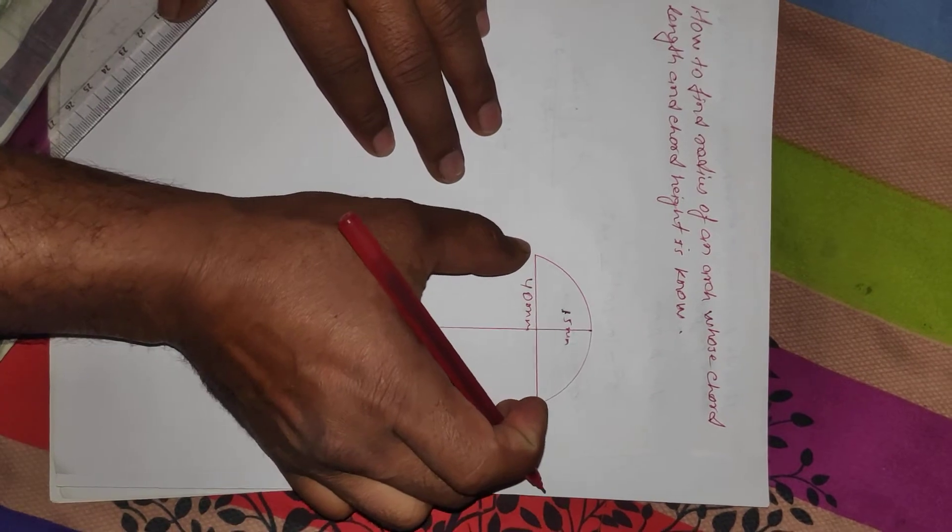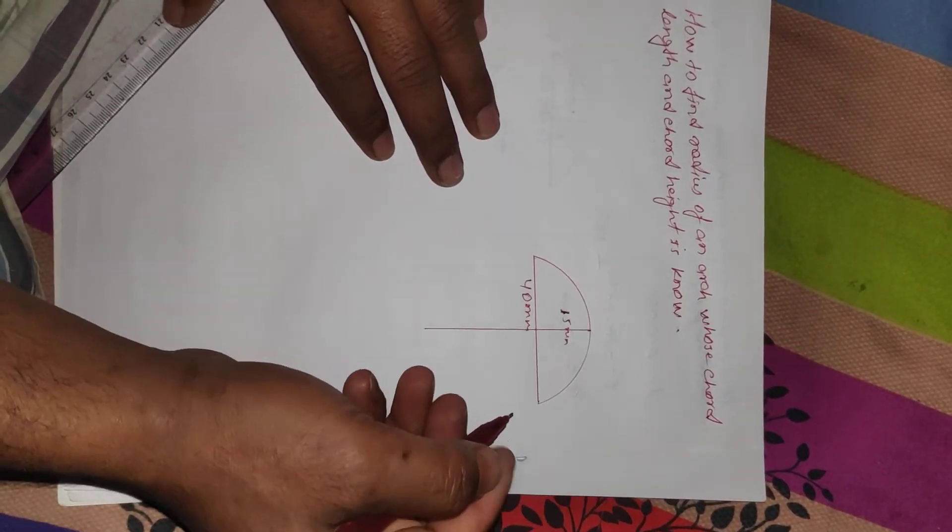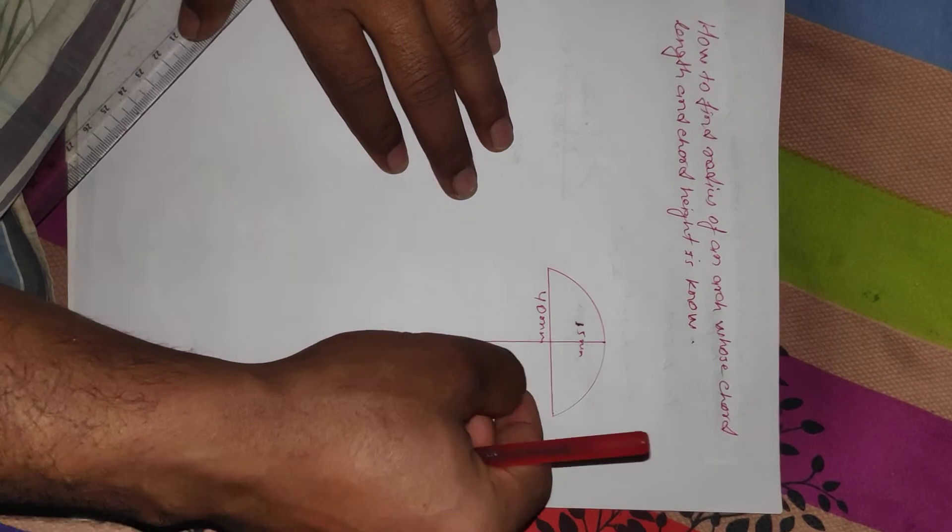Suppose we know these two values, chord length and chord height. Now we have to find what would be the radius of this arc.